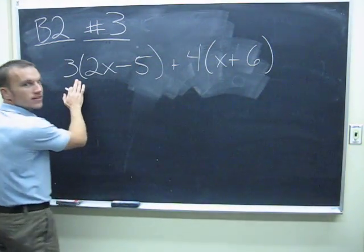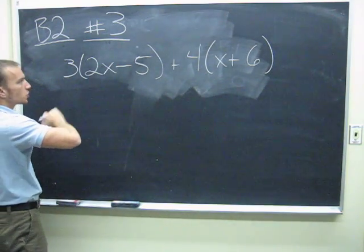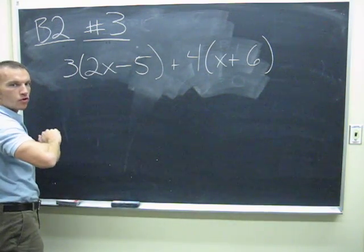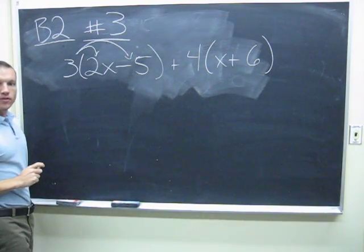This 3 outside the parentheses means 3 times the difference of 2x and 5, so we have to distribute the 3 throughout. That is, multiply 3 by both of those numbers.